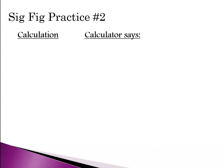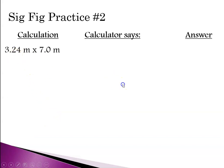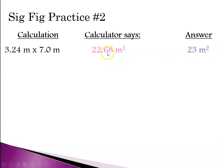Let's look at more calculations — what the calculator gives us and then we'll round correctly. In the first case, the calculator gives us 22.68. We had 3 sig figs versus 2 sig figs, so we round to 2 sig figs. The 6 is going to cause us to round up, so the correct answer is 23.